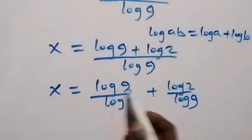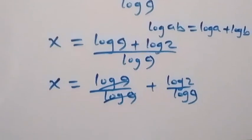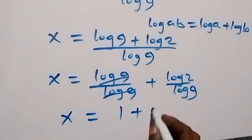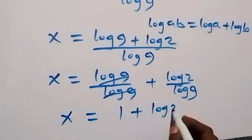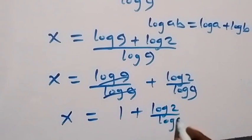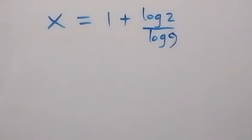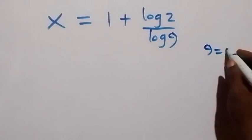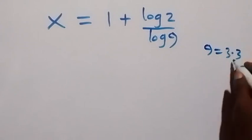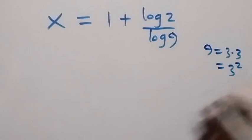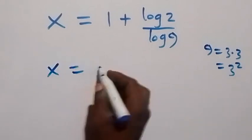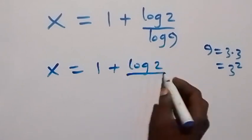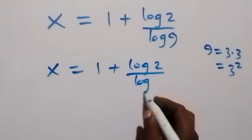From here, we can simplify further and write 9 as 3 times 3, which is also 3 squared. We have x equals 1 plus log 2 over log 3 squared.